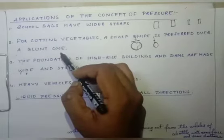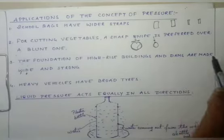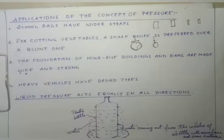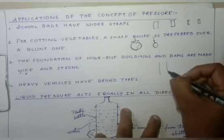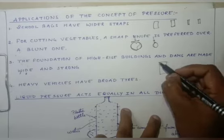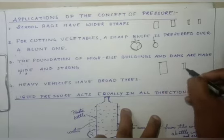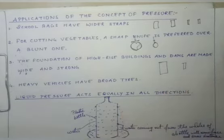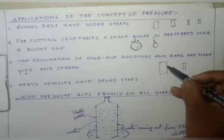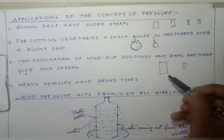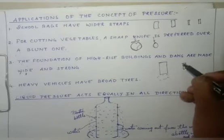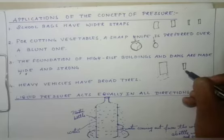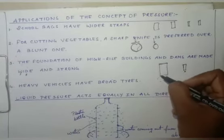The foundations of high-rising buildings and dams are made wide and strong to decrease the pressure on the ground. If the area of cross-section of the pillar is more, less pressure will be applied and the pressure will be distributed throughout the ground. If the pillar of the dam is thin, the pressure concentrates at one point. That is why the pillars of the dam are made broader.